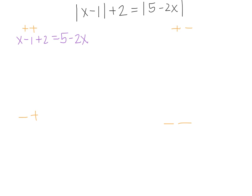For the positive-negative case, the left-hand side will also be x minus 1 plus 2. On the right-hand side, we multiply everything inside the absolute value by negative 1. We need to only multiply what's inside the absolute value by negative 1, so we have negative times the quantity x minus 1, and then the 2 stays as plus 2 because it is outside of the absolute value.